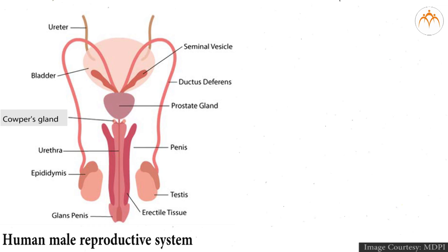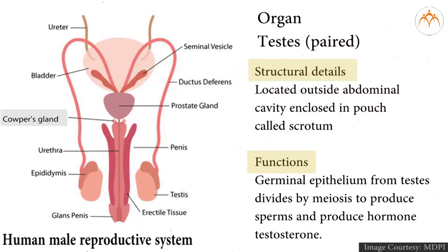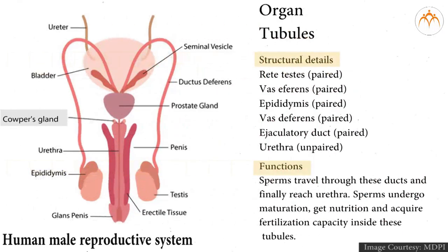Observations: Human male reproductive system — organ, structural details, and functions. Testes are located outside the abdominal cavity, enclosed in a pouch called the scrotum. The germinal epithelium from the testes divides by meiosis to produce sperms and produces the hormone testosterone.